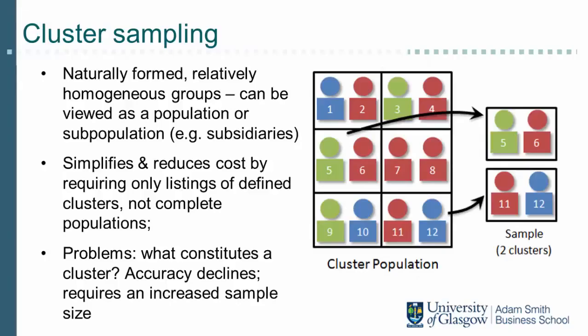Cluster sampling allows us to use random sampling without going bankrupt. Consider sampling frames consisting of all consumers, employees, or managers in a certain country — randomly selecting elements from those frames would require travelling all over, which is too expensive. The solution is to randomly sample in stages by first selecting clusters of elements. For example, to sample employees within multinational subsidiaries, in the first stage we draw a list of subsidiaries, cluster them into countries, and then randomly select a small number of countries, using stratification to ensure we include developing countries.